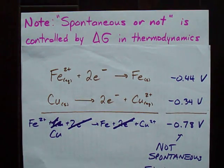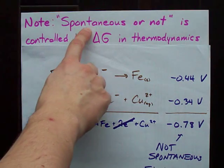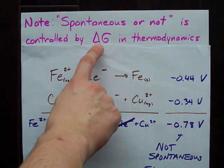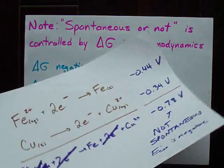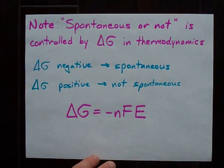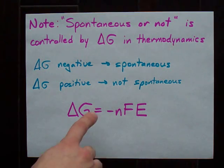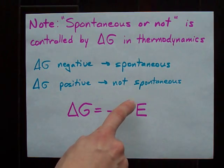What you may remember if you've taken any thermodynamics is that spontaneity is controlled by delta G. So delta G and E cell have to be related to each other somehow. And the answer is they are. Delta G equals negative nFE.